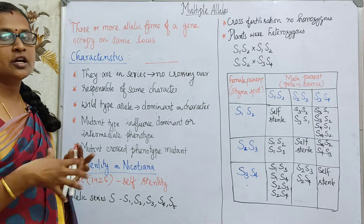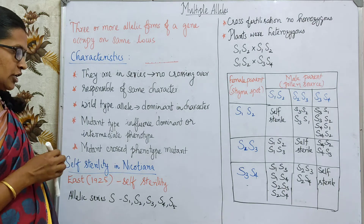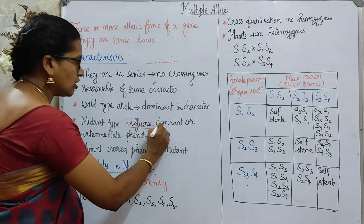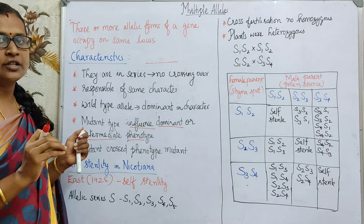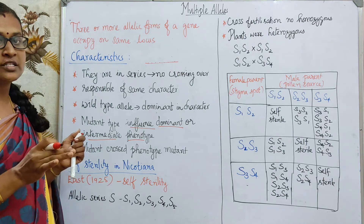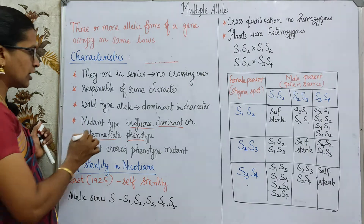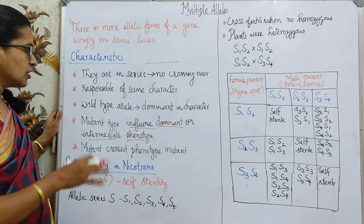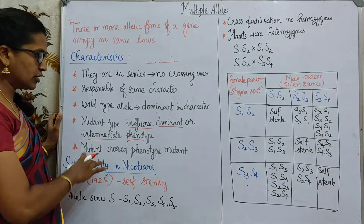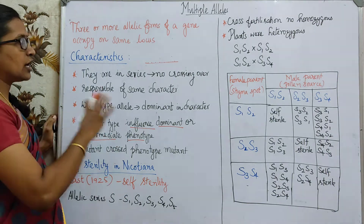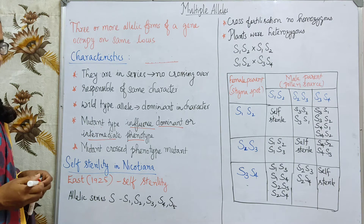Next is the mutant type. If there is a mutant in that particular type, it influences both the dominant or intermediate phenotype. The expression will be only the mutant type — in the next generations, we cannot see the dominant or any intermediate phenotype; we can see only that mutant type. Hence, when mutants are crossed, the phenotype is mutant.